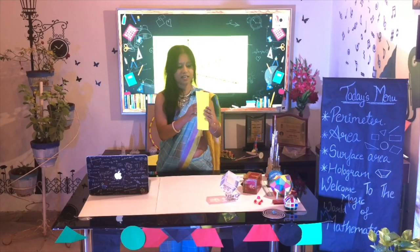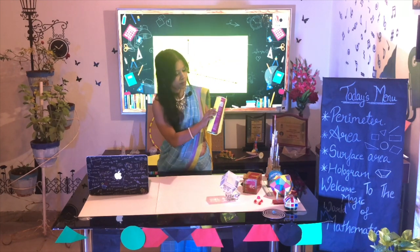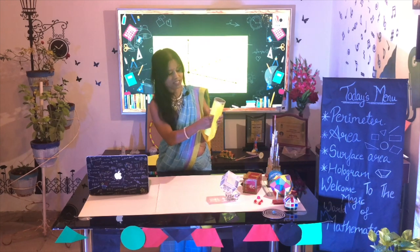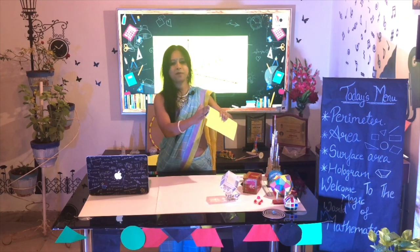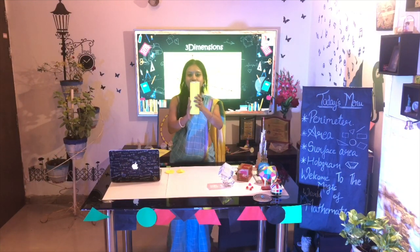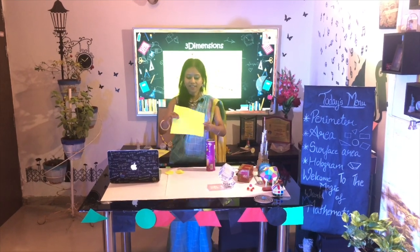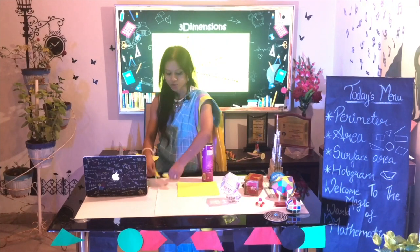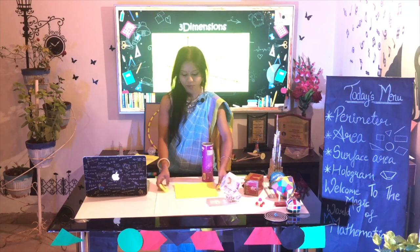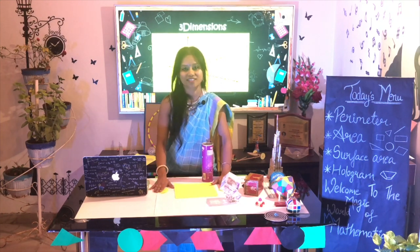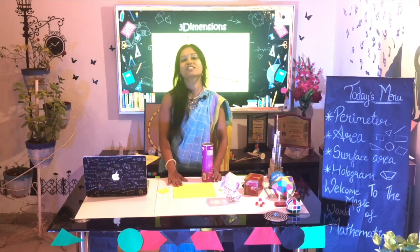When I start covering a cylinder, it takes a rectangular sheet of paper that fits exactly, and the remaining parts are the circular ends. So if we open a cylinder, we get a rectangular sheet and two circles at the bottom and the top. A cylinder is made up of a rectangular sheet and two circles. This is how we understand the surface area of a cylinder.